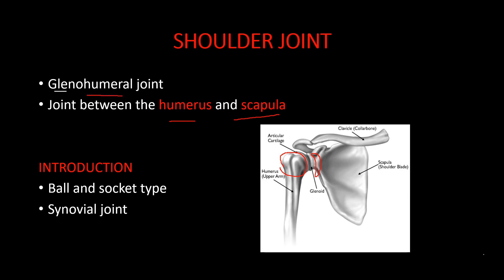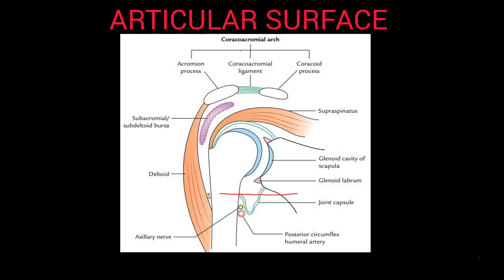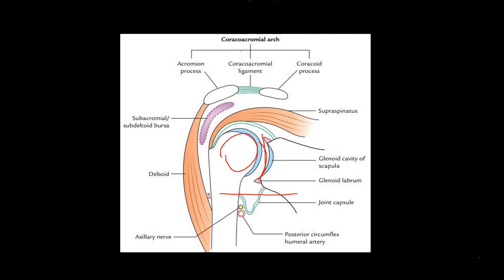The type of joint is a ball and socket type, and it is a synovial type. The articular surfaces are the head of the humerus and the shallow glenoid cavity. The shallow cavity is deepened by a fibrocartilaginous structure called the glenoid labrum, which helps make the shoulder joint more stable.